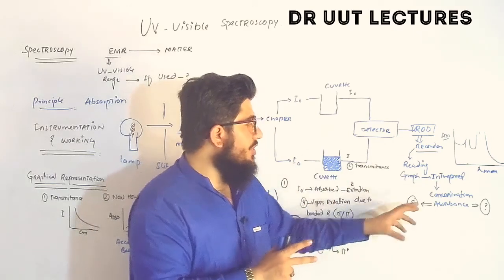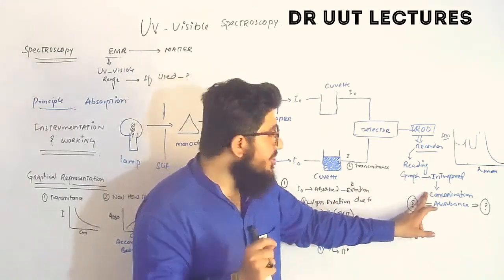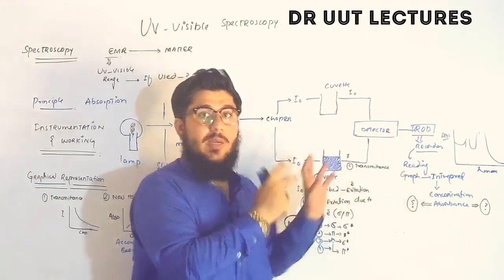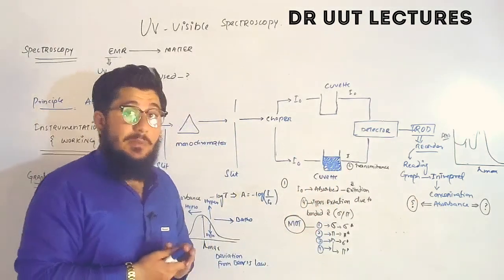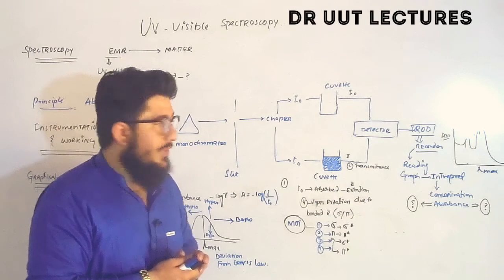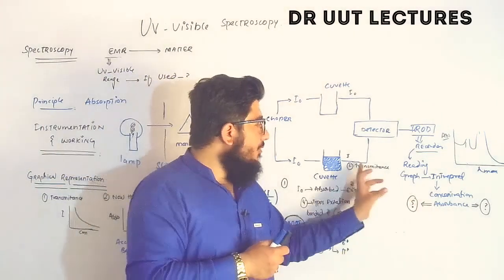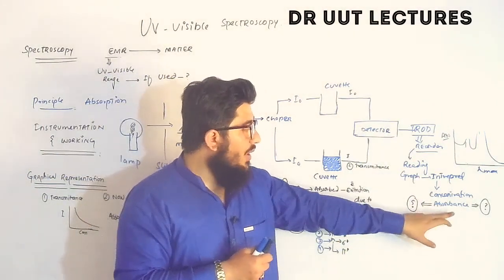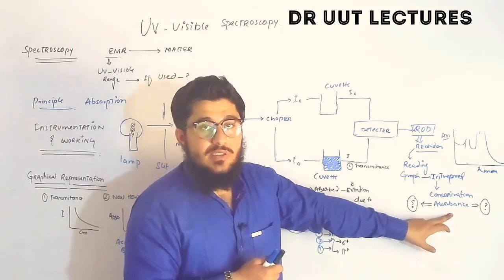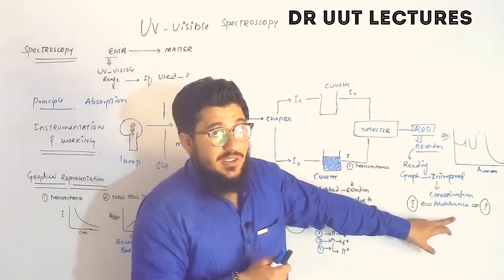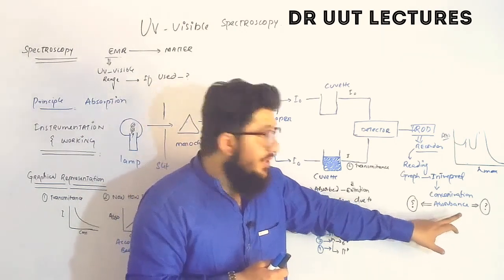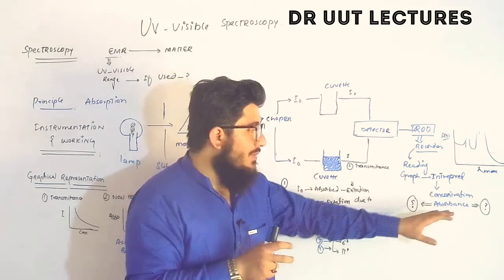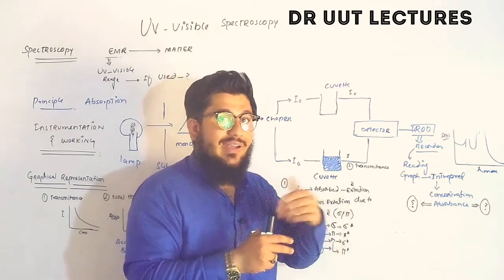The detector records the reading, and the readout device interprets it. After interpretation we find the concentration and absorbance of the sample. A question arises: we are getting transmittance — so how do we actually get the absorbance reading?